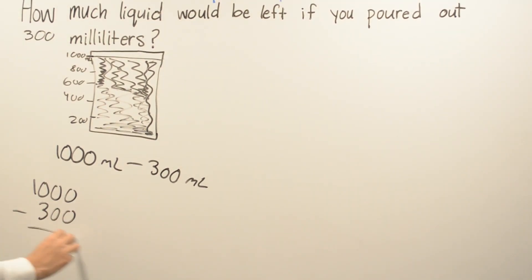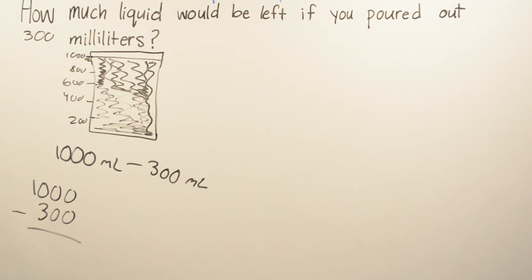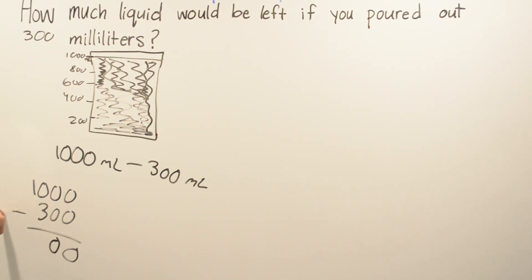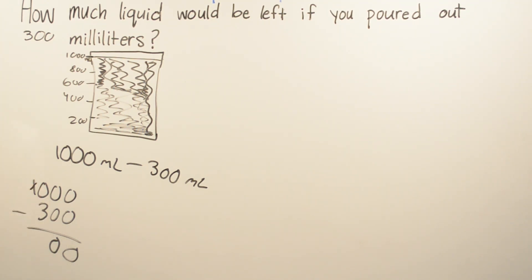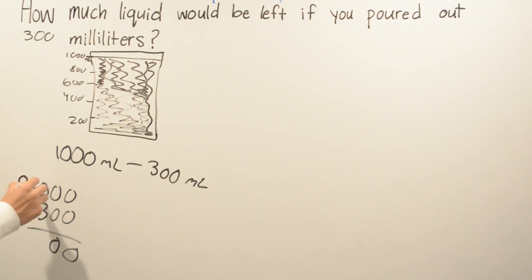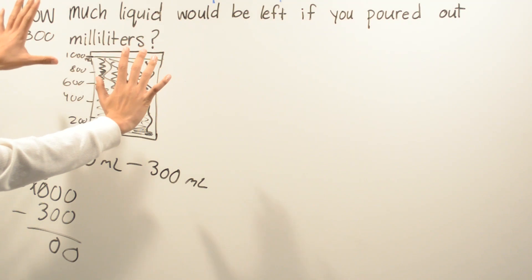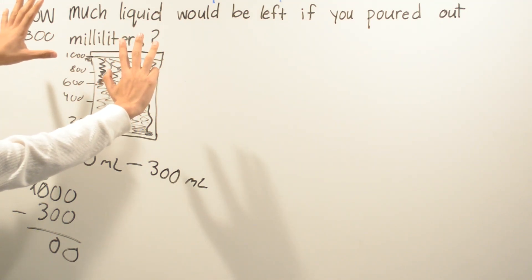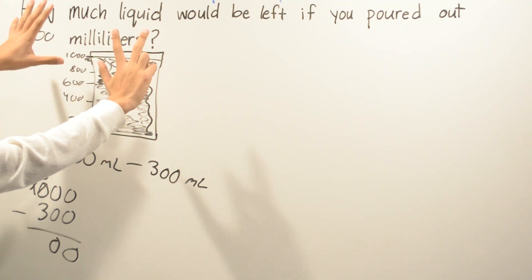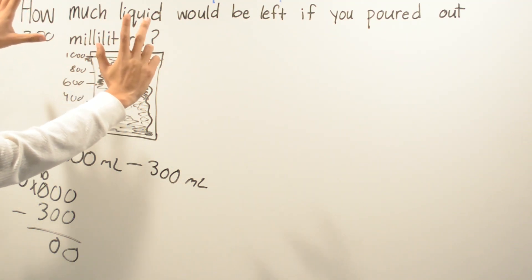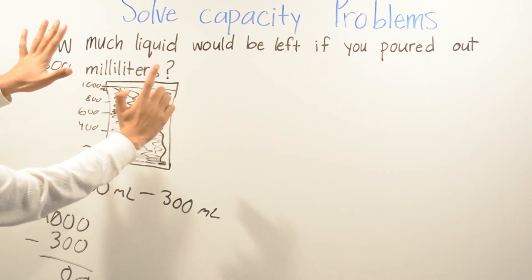Make sure you line up your numbers. 0 minus 0 is 0, 0 minus 0 is 0. Can you subtract 0 minus 3? No, so you have to borrow from your left number. When you borrow, you take out — so instead of being a 1, it becomes a 0, and this becomes a 10. So 10 minus 3: counting down gives us 7. Your final answer is 700.